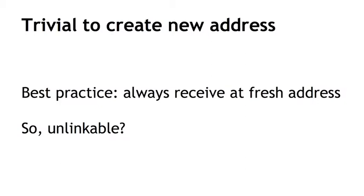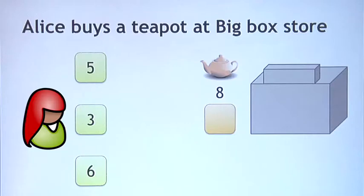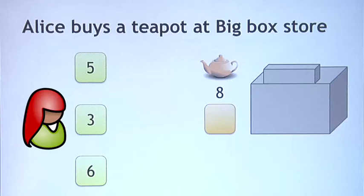You might think these different addresses must be unlinkable — you receive a transaction here, then spend it by sending to somebody else; you receive another transaction at a different address and send it to someone else. But here's the key scenario: Alice, a customer, goes to a big box store and wants to buy a teapot listed at 8 Bitcoins. Alice has a few Bitcoins lying around with different denominations. She doesn't have an address with exactly 8 Bitcoins, so she's going to combine several different input transactions into a single transaction to pay 8 Bitcoins to the store.